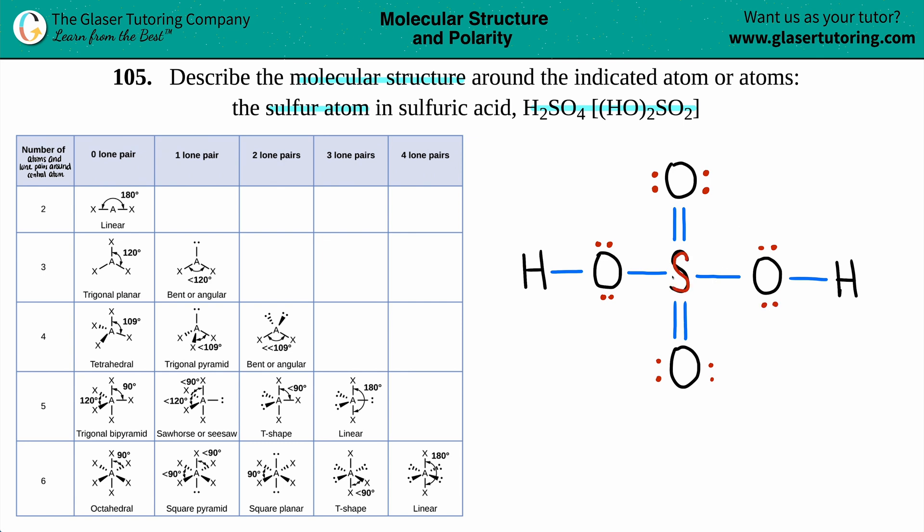And just know that the sulfur in the middle, it's okay that it has more than eight because sulfur is one of those atoms that can have an expanded octet. And in this case, it has 12 electrons and that's the max, two, four, six, eight, 10, 12.